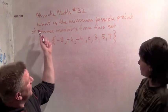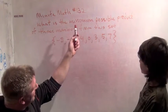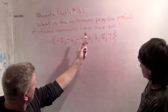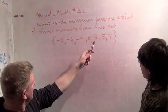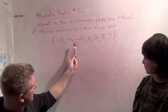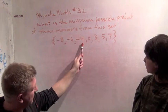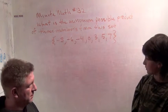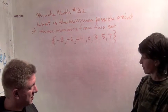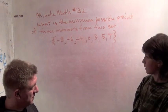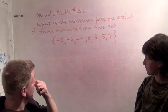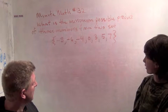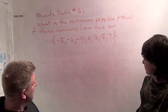Alright, here we go. What is the minimum possible product of three numbers from the set: minus 8, minus 6, minus 4, 0, 3, 5, 7. Do you understand the problem? Yep. What are you trying to do with this problem? We have to make the smallest product of these three numbers.